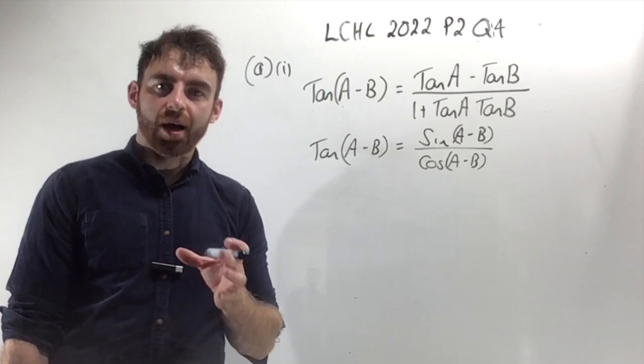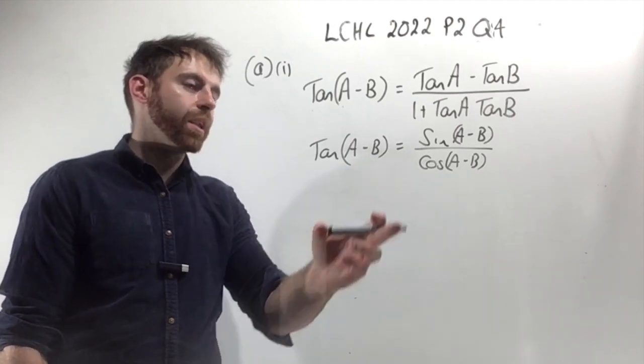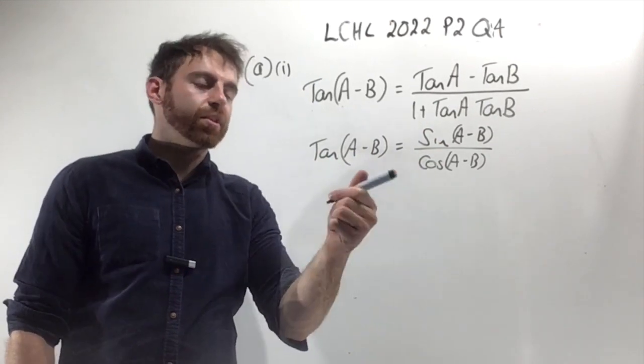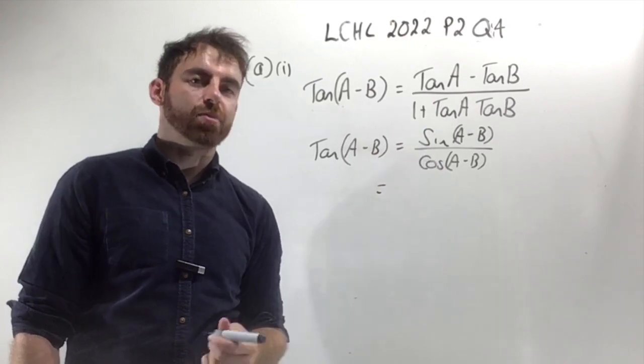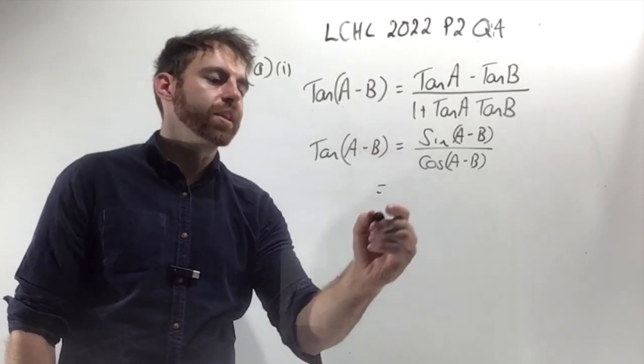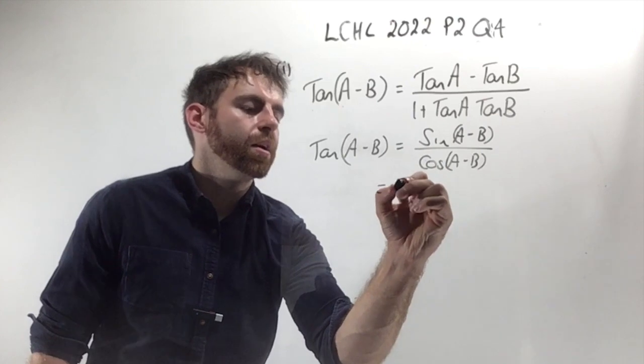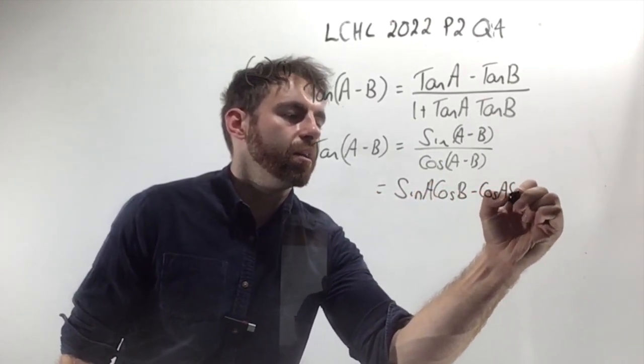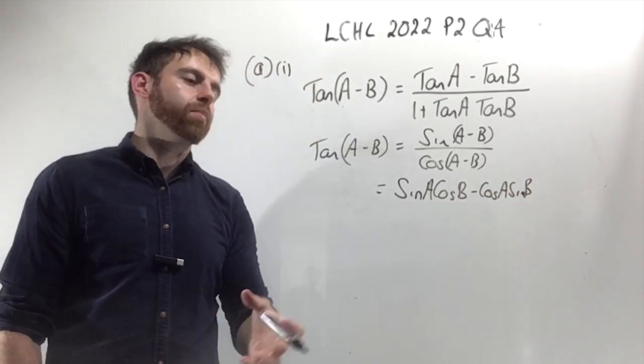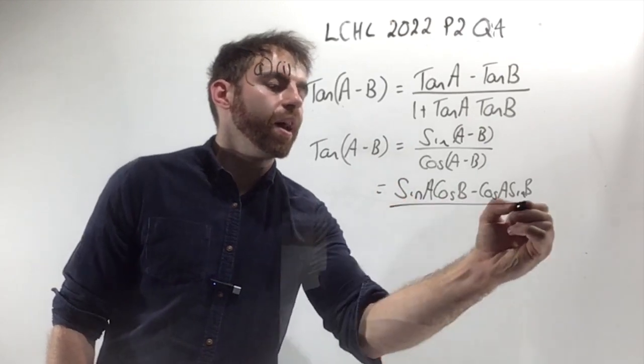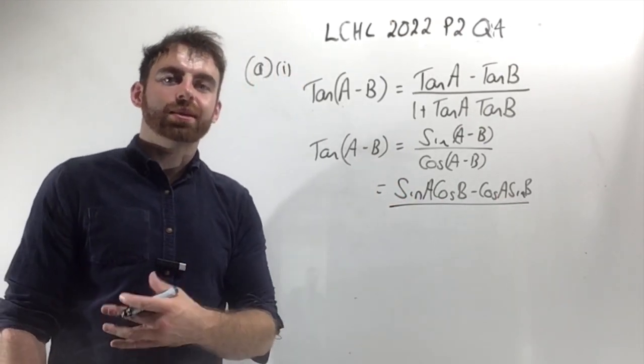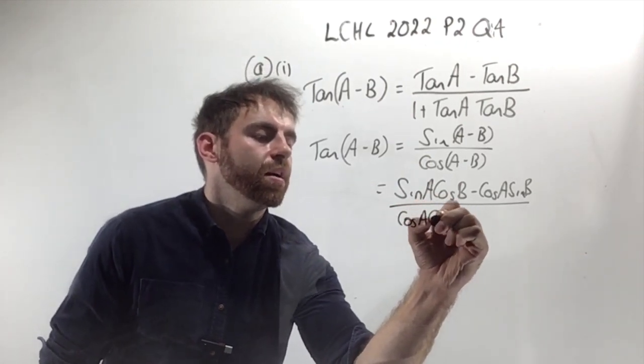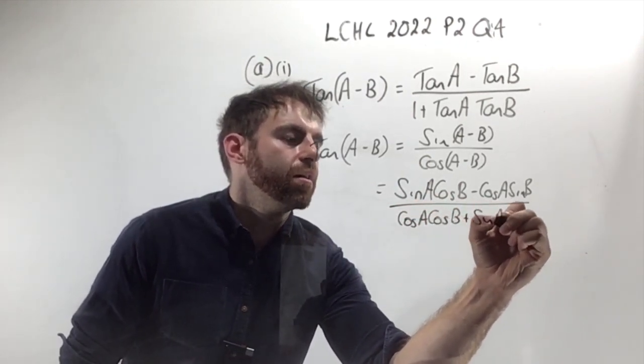Now look at the top of page 14 in your maths tables. There's a formula for sine A minus B and for cos A minus B. Starting with the top of the fraction, sine A minus B equals sine A cos B minus cos A sine B. On the bottom, cos A minus B can be rewritten as cos A cos B plus sine A sine B.